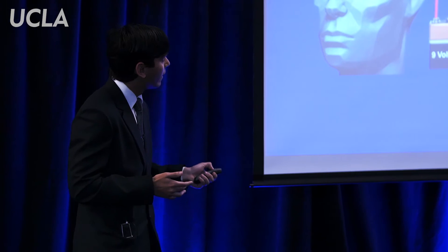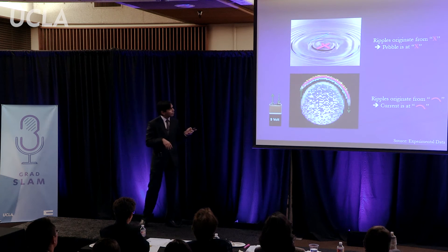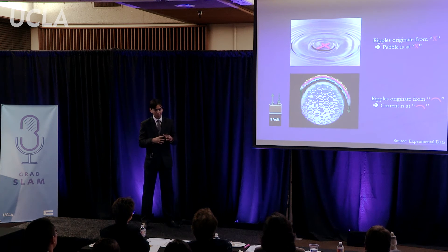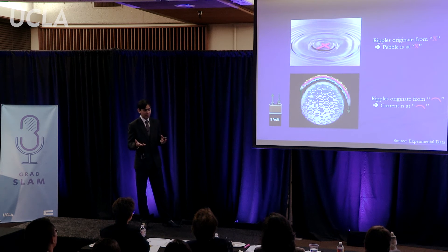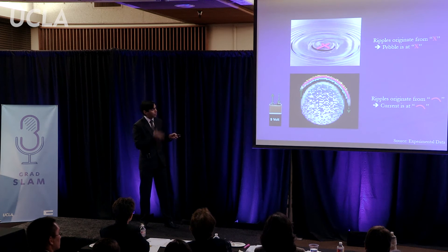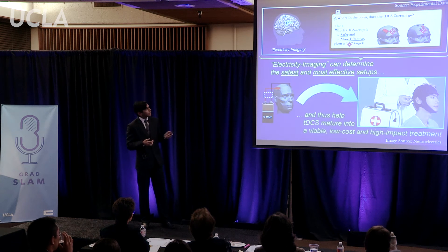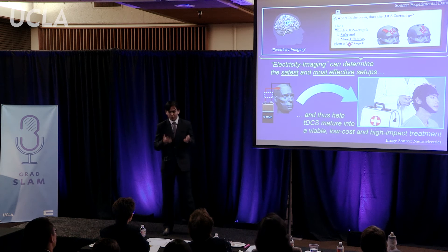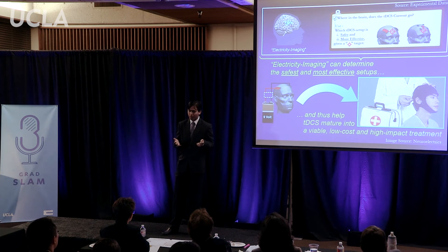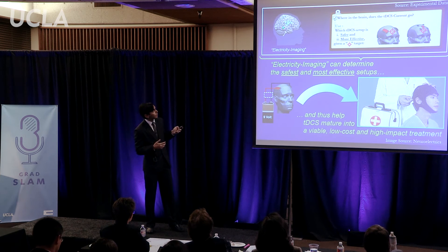So how is this done? Just like a pebble in water creates ripples, electric current creates magnetic ripples. In the top figure, if we can figure out the source of the ripples, we'd know where the pebble is. Similarly, in the bottom figure, if we can figure out the source of the magnetic ripples, shown here by the blue color abruptly changing to red, we'd know where the electric current is. Visualizing TDCS electric currents in the brain using magnetic ripples is my contribution to the TDCS field, and you can see it in action in the figure on the top left.